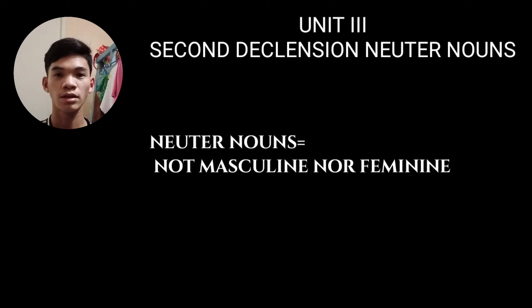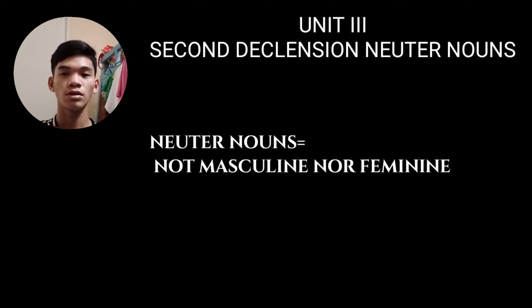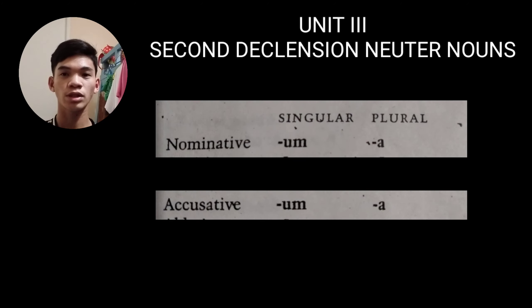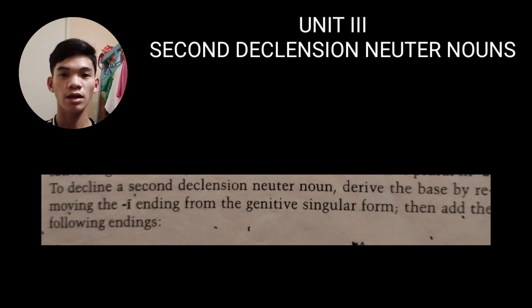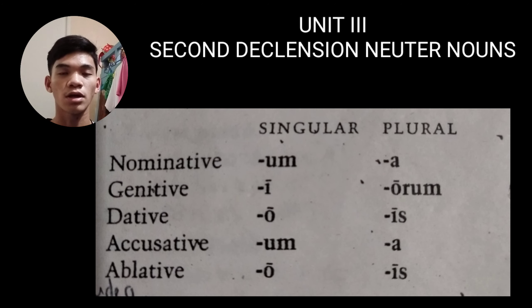As we all know, neuter nouns are nouns that have neuter gender. Neuter gender means a gender which is neither masculine nor feminine. These neuter nouns are classified in the second declension. Neuter nouns of the second declension have a nominative and accusative singular ending -um, and a nominative and accusative plural ending -a. To decline a second declension neuter noun, derive the base by removing the -i ending from the genitive singular form, then add the designated endings.